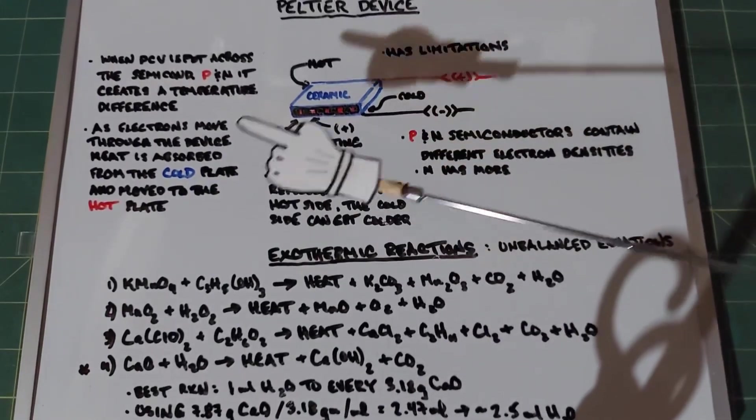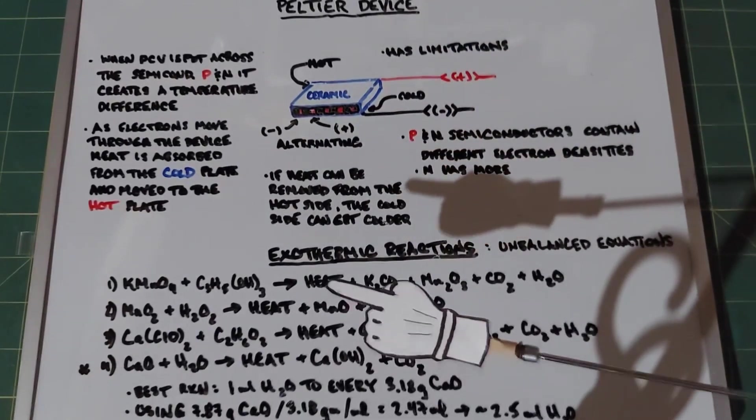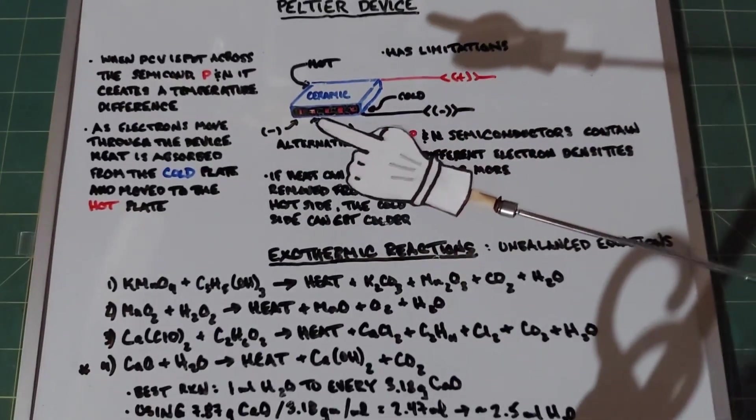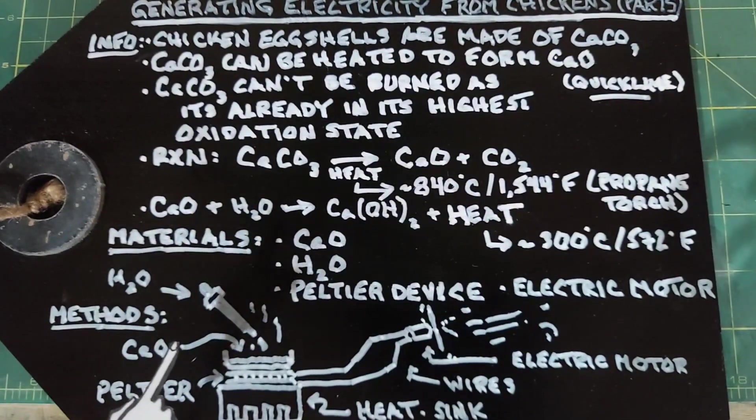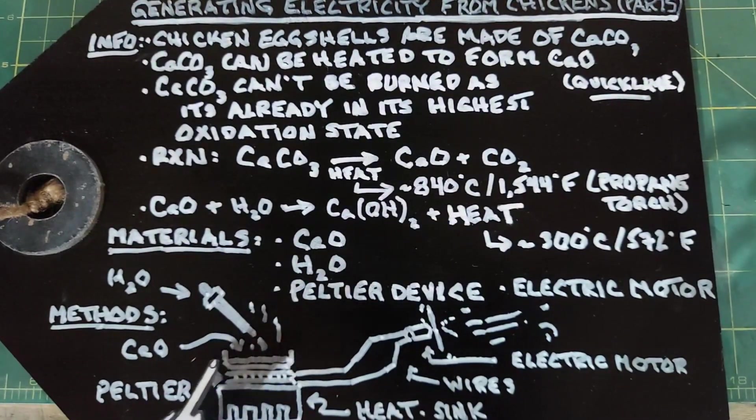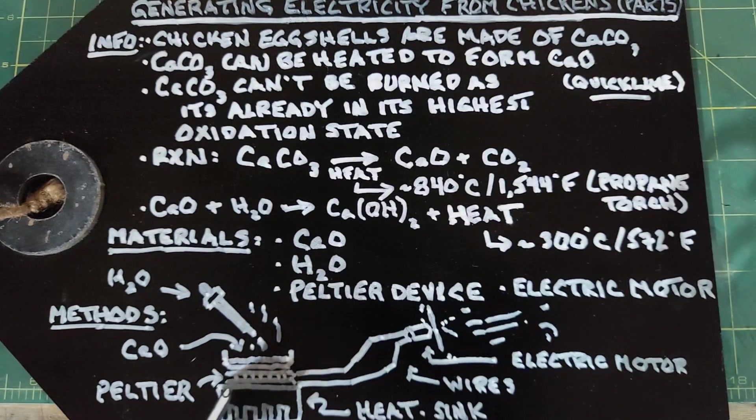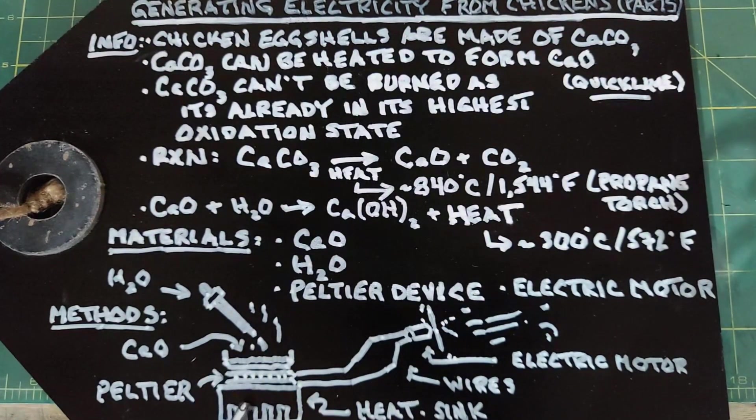I really hope I did an okay job explaining this and that you're not confused, but at this point we're going to go back to the black slate. To understand the Peltier device better, let's talk about our methods. I'm going to have a little cup up here with the calcium oxide, then the Peltier device sandwiched in the middle, and a heat sink down here.